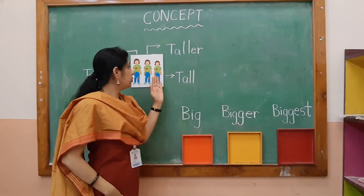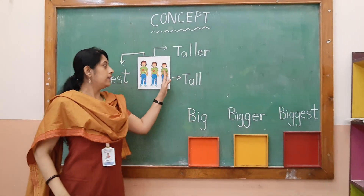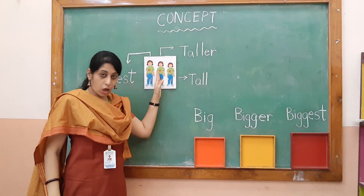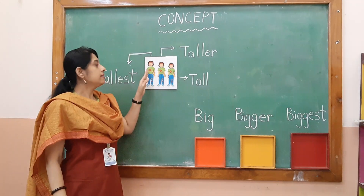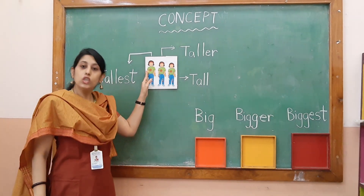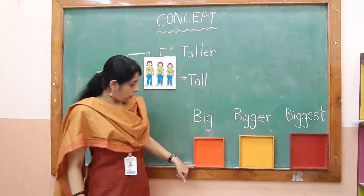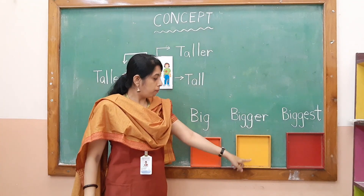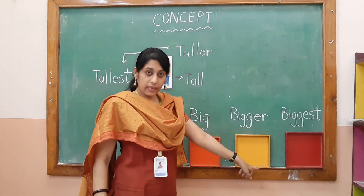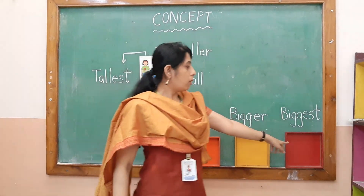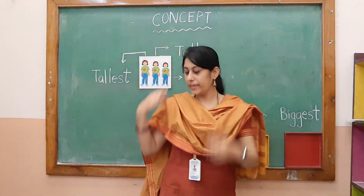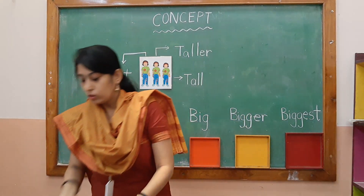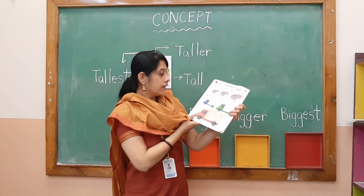You can see on the board: this girl is tall, and these blocks demonstrate the concept — this block is big, this block is bigger, and this block is biggest.